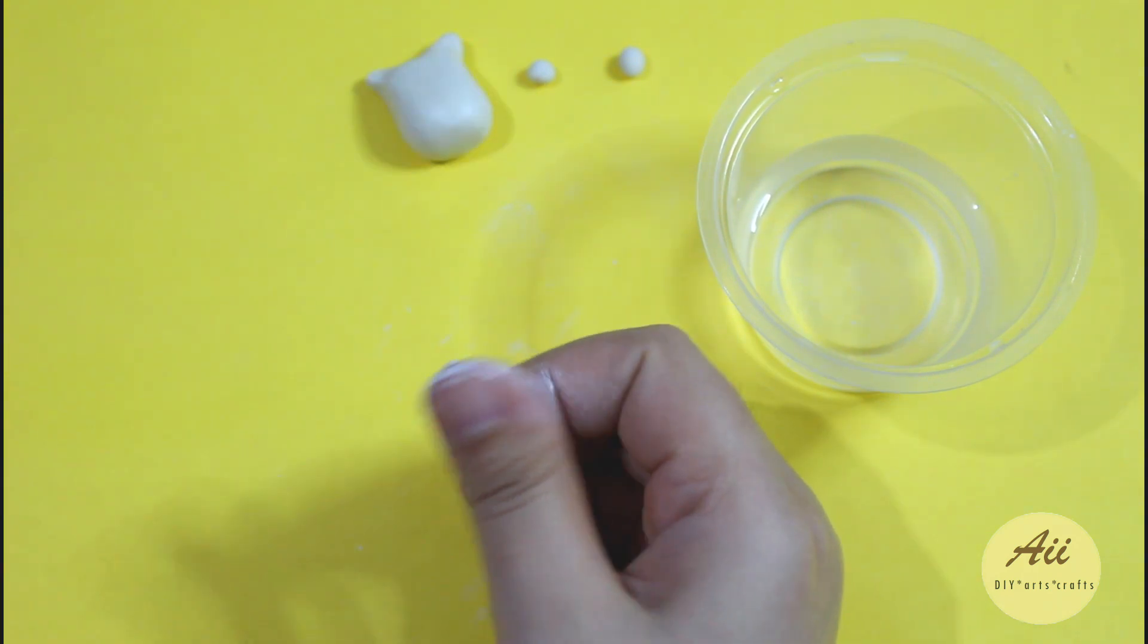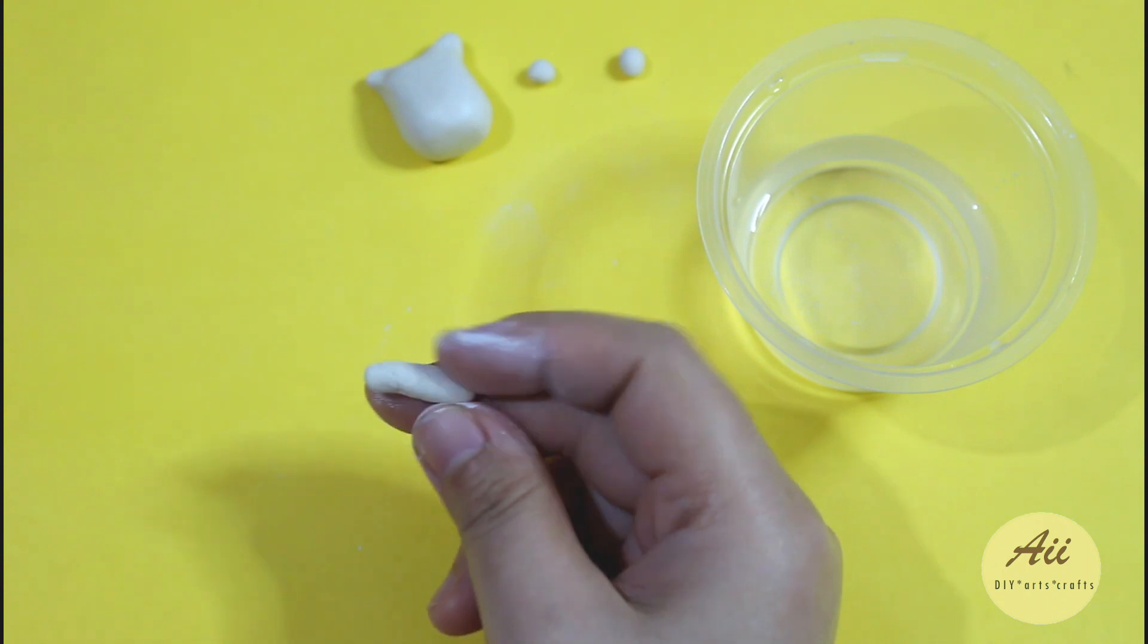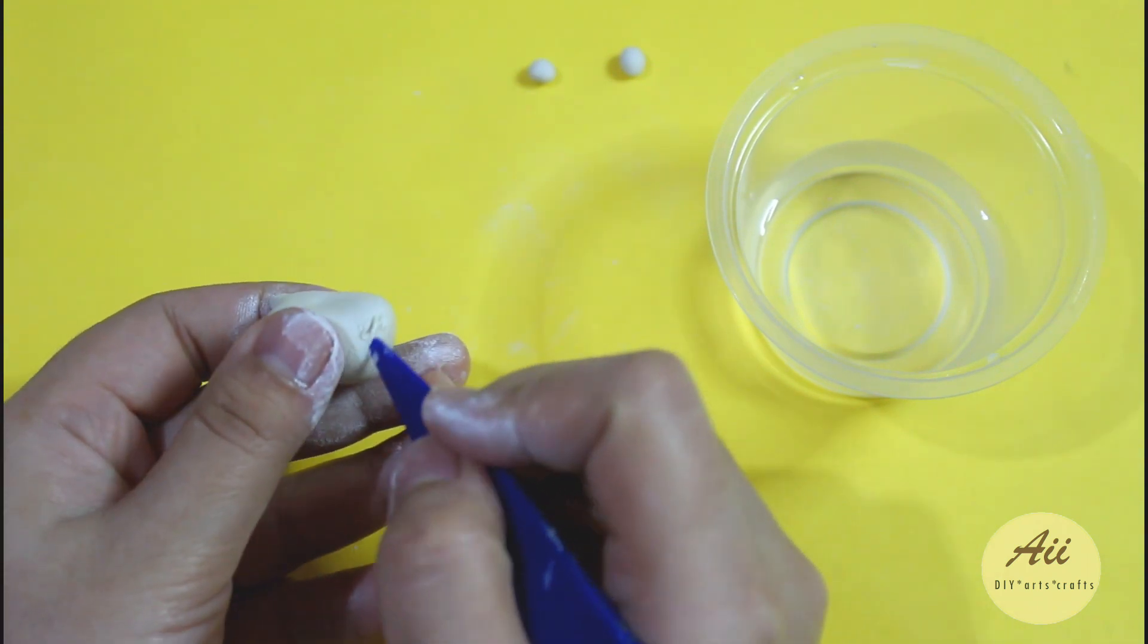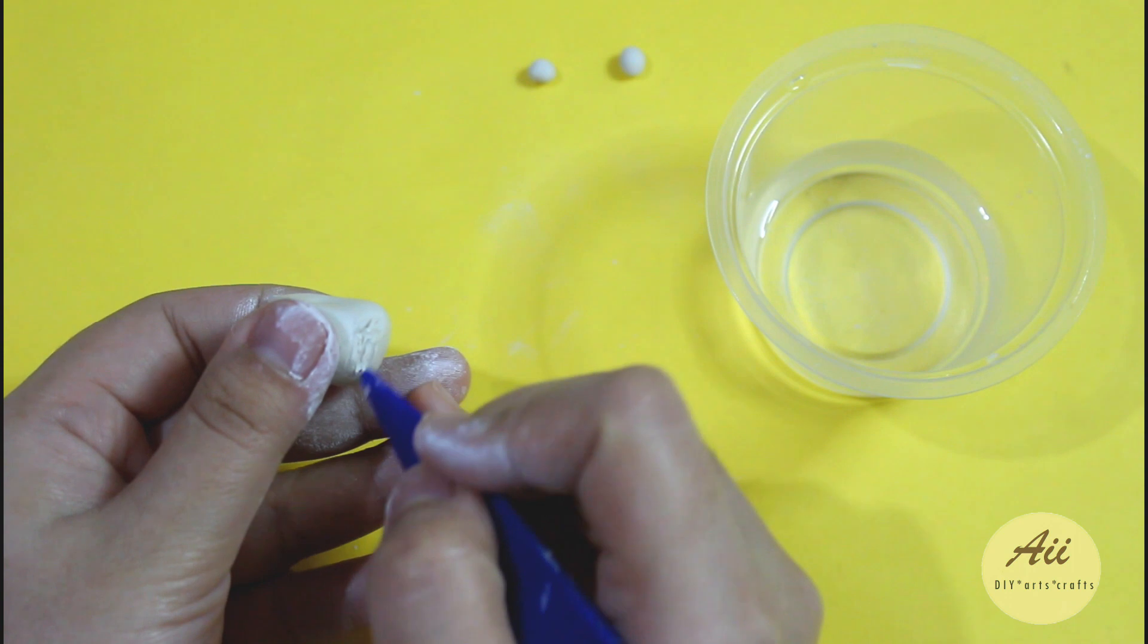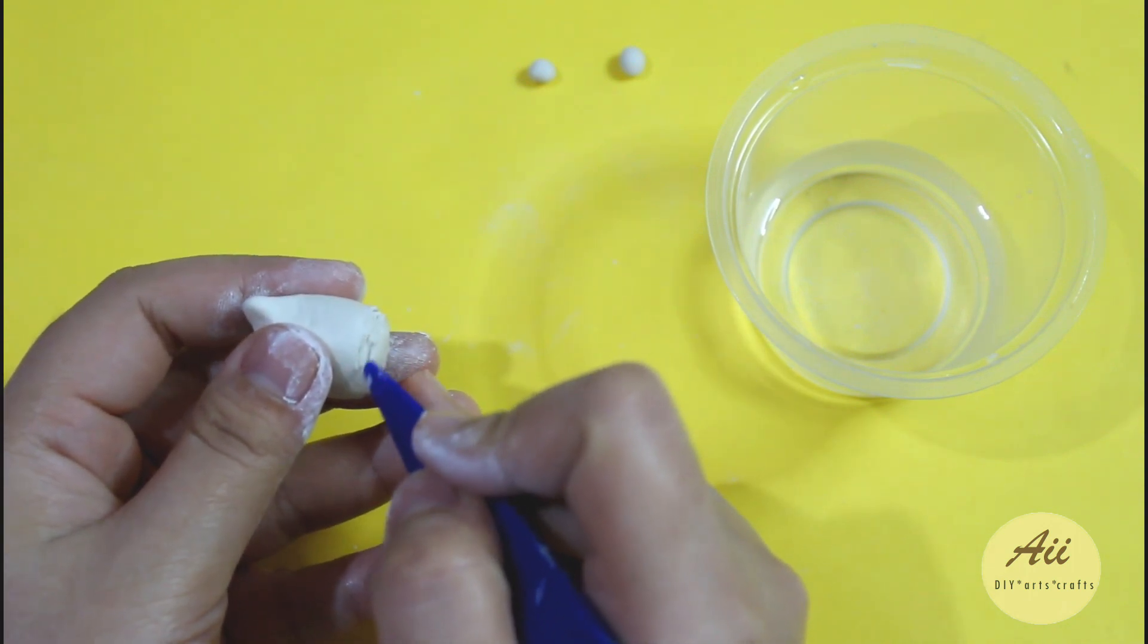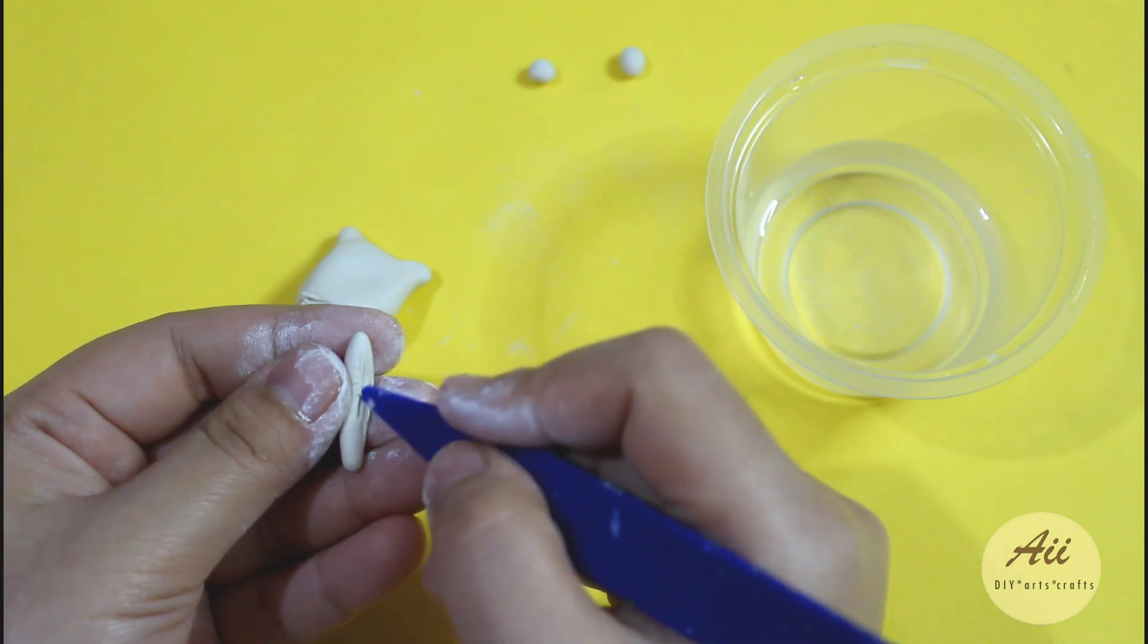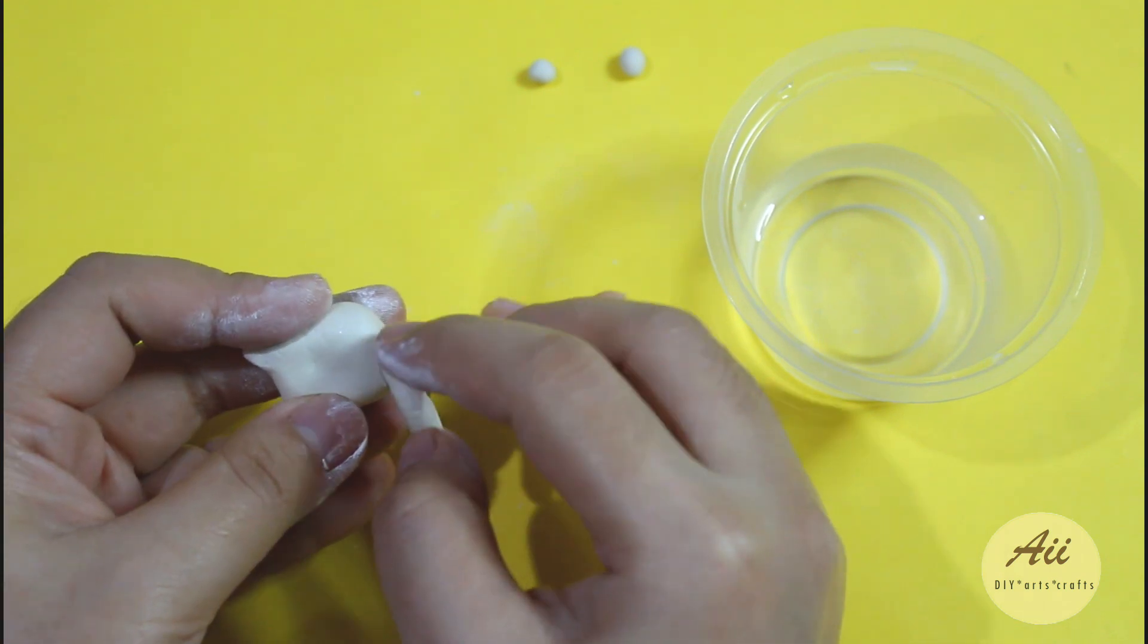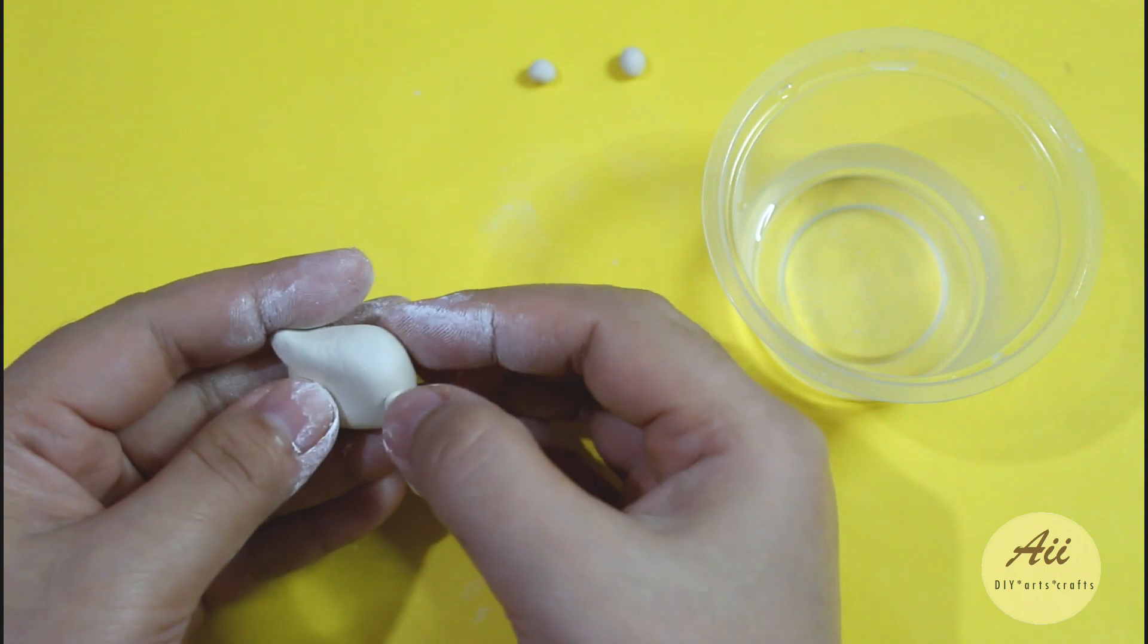Using the smaller clay, roll it into a small and longer cylinder to create a tail. Attach the tail from the back, extending it to the front.